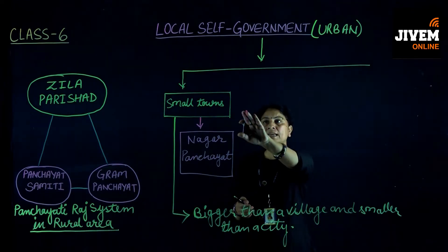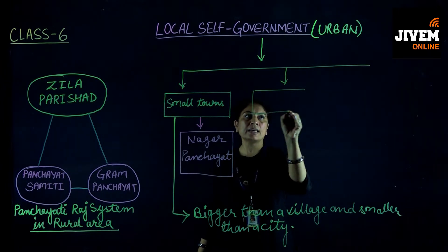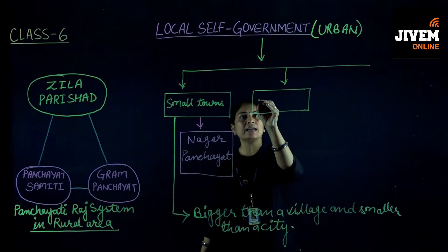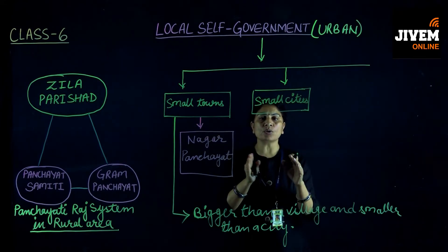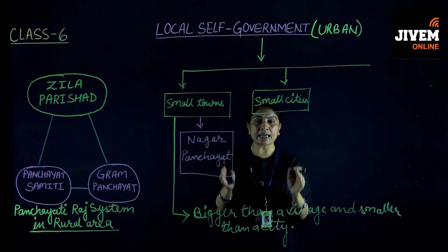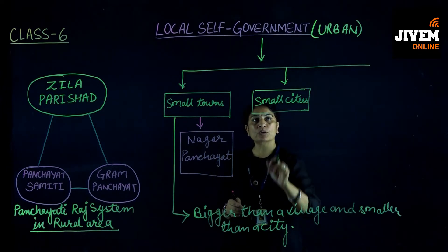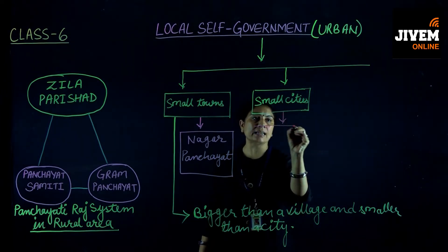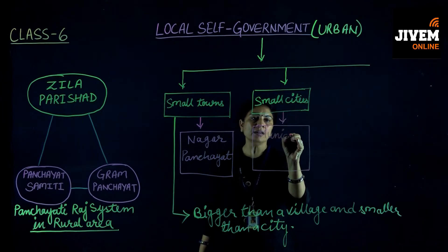After small towns, if we categorize the second category of urban areas, it is small cities. The size of towns and cities is measured by their population — the number of people living there, the area covered, and how densely populated they are. To manage small cities, a Municipal Council is formed, which is also called a Municipal Committee.